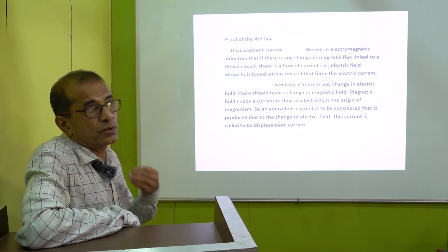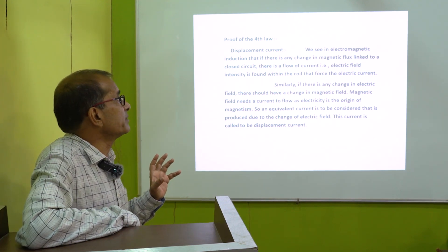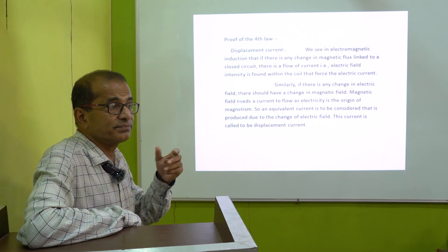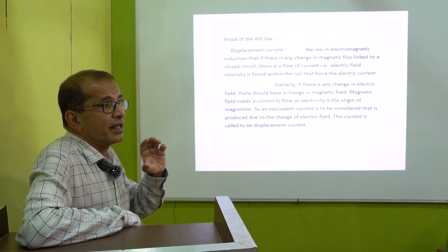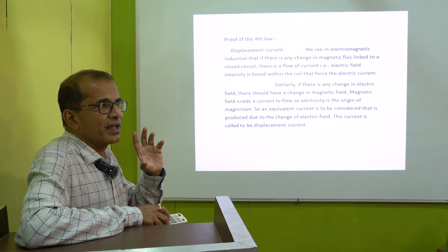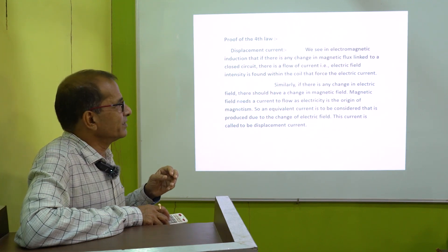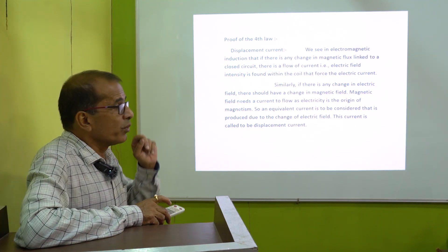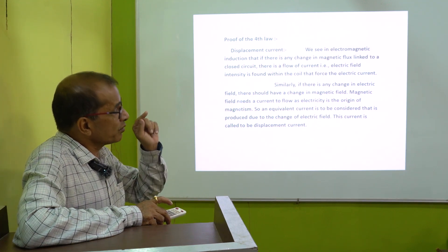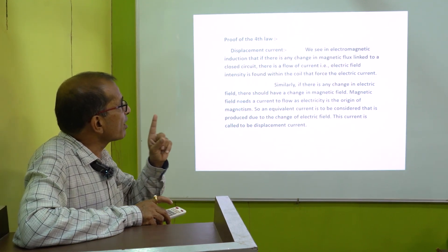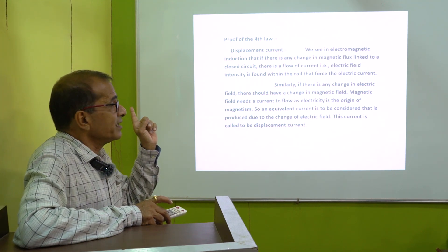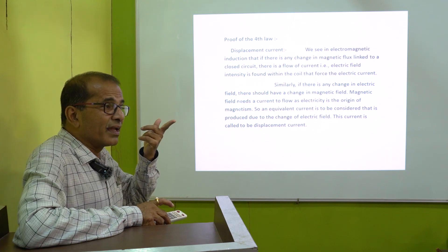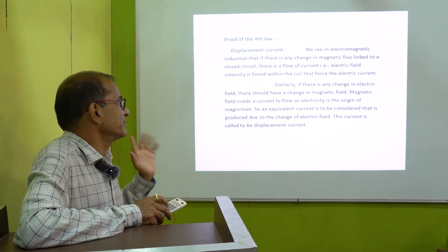Proof of the fourth law. Before proving the fourth law, we must take the conception of displacement current. What is displacement current? If there is any change in the electric field, a magnetic field is produced. A magnetic field can only be produced if there is any current. So we must consider a current caused due to the change of the electric field — this is called the displacement current. This current is not generated by the flow of charges, but is produced by the change of the electric flux or electric field intensity.